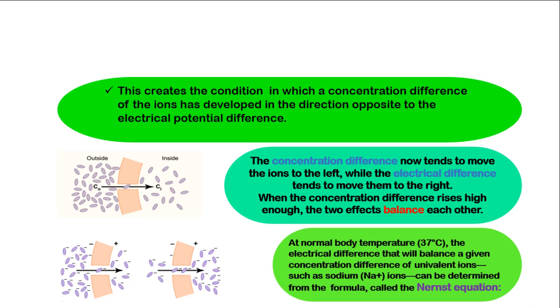At the normal body temperature of 37 degrees Celsius, the electrical difference that will balance a given concentration difference of univalent ions, such as sodium, can be determined using the formula known as the Nernst equation.